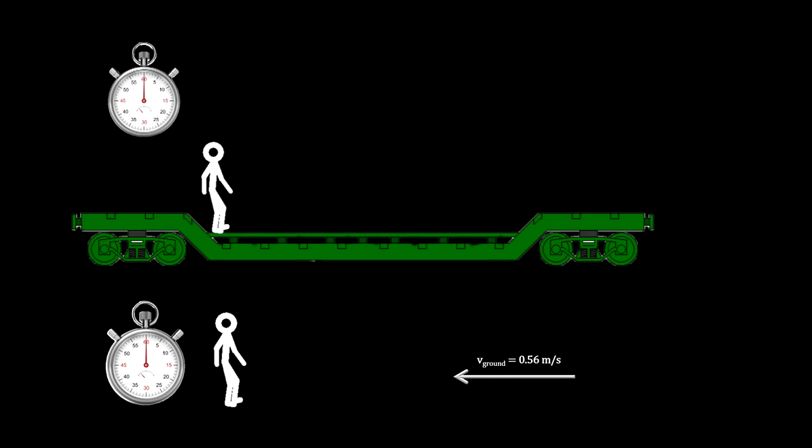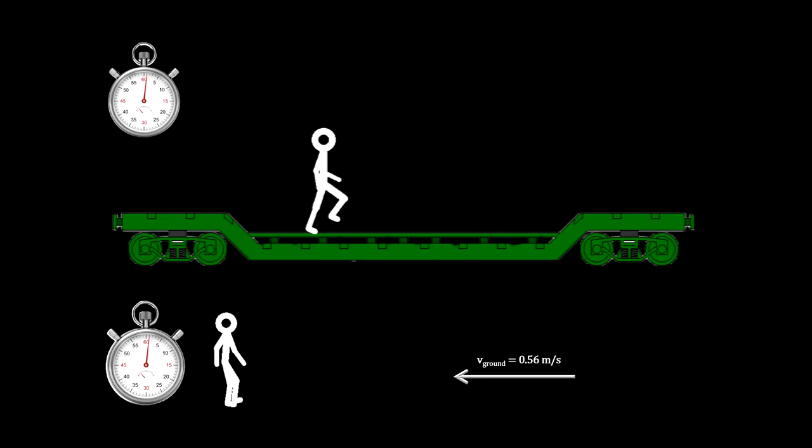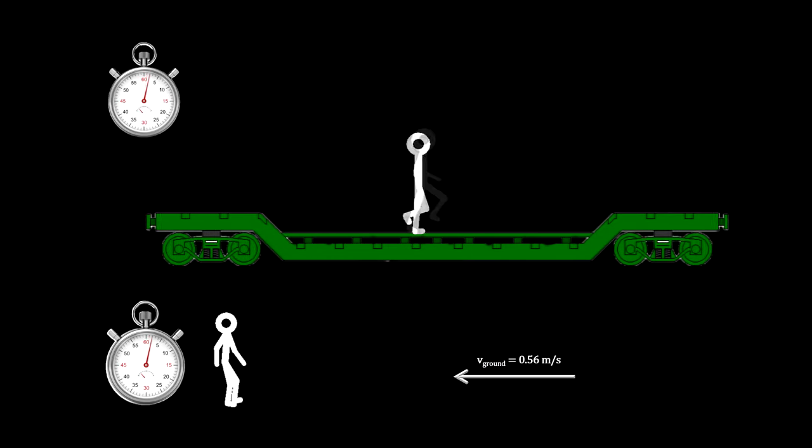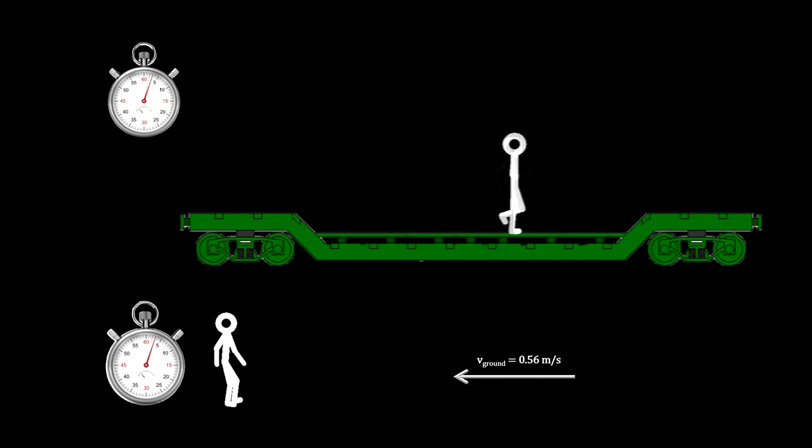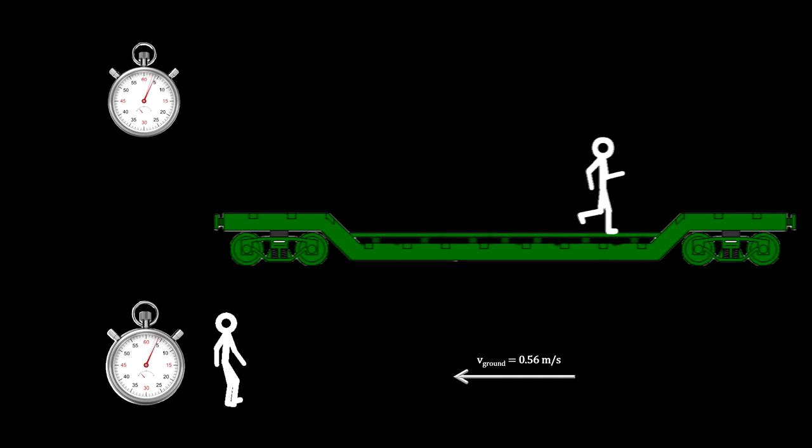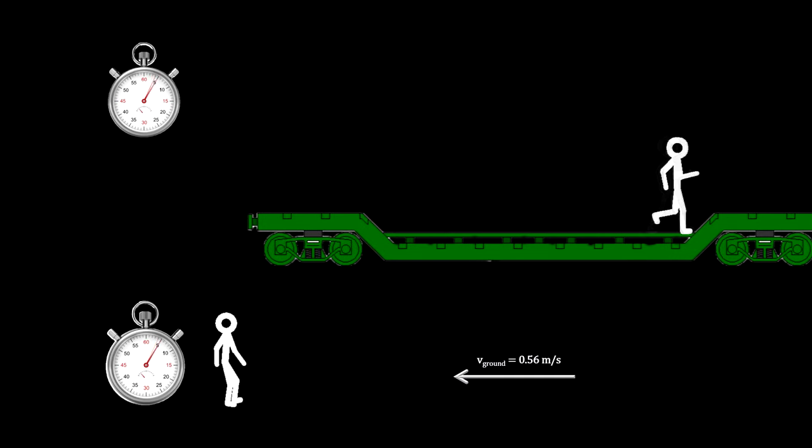In fact, we could have done it from the point of view of the train instead of the person on the ground. In that case, it is the person on the ground that is moving at 0.56 meters per second to the left, instead of the train moving to the right.